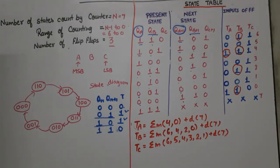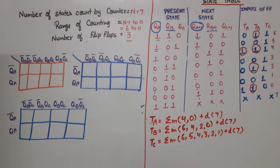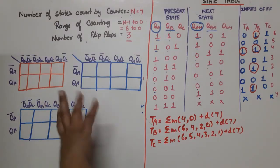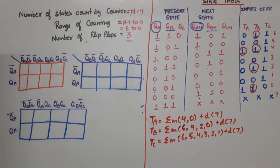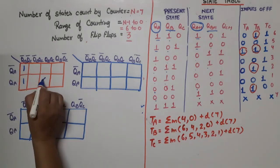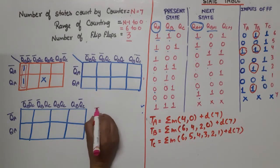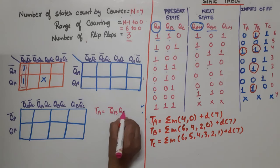Drawing the K-map for TA. The minterms are 1, 4, and 0, with don't care at 7. Only one pair is possible in this K-map. From this pair, the common variables give QB̄·QC̄. Therefore, TA = QB̄·QC̄.